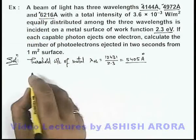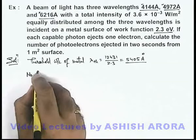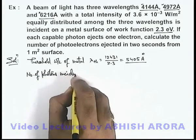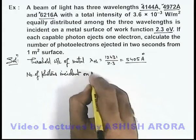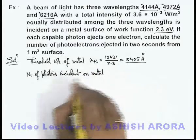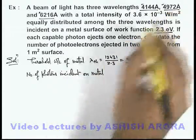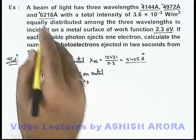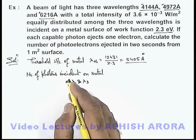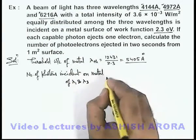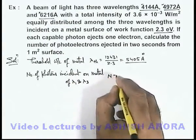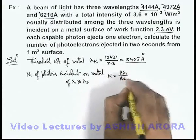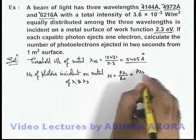So here we can calculate the number of photons incident on the metal of lambda 1 and lambda 2, because lambda 3 is not of any use as it is not ejecting any electron. The total number of photons can be written as: P·λ₁/(hc) + P·λ₂/(hc).